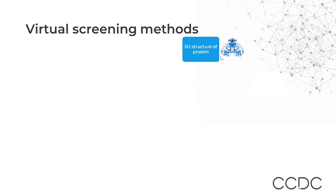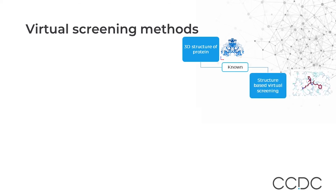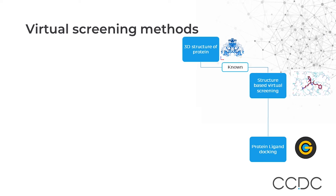The techniques applied in virtual screening depend mainly on the amount of information available about the particular disease target. If the 3D protein structure of the target is known, then the preferred approach is structure-based virtual screening, which is protein-ligand docking. CSD Discovery has a well-validated program for this purpose.